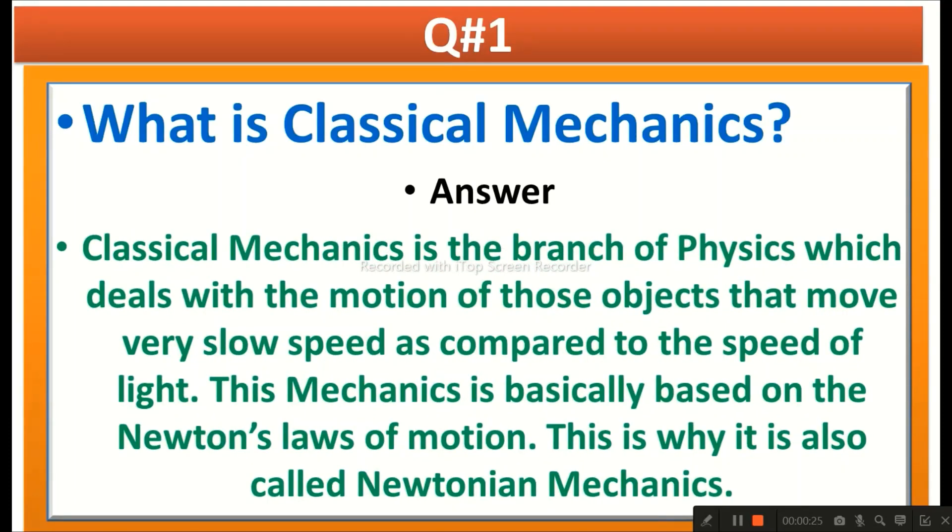Classical mechanics is the branch of physics which deals with the motion of those objects that move very slow speed as compared to the speed of light. This mechanics is basically based on Newton's laws of motion. This is why it is also called Newtonian mechanics.